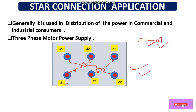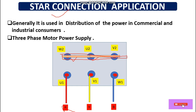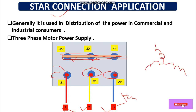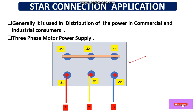To make a star connection in the motor terminal box, we use connector strips. Simply short all the second-end terminals — U2, V2, W2 — together at one point using a strip, then connect the three-phase power supply R, Y, B to U1, V1, and W1 respectively. In this way we can connect the motor in star connection.